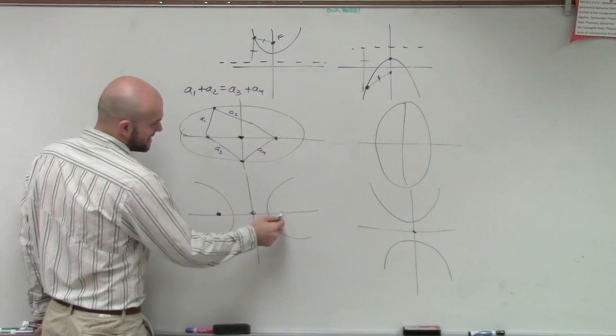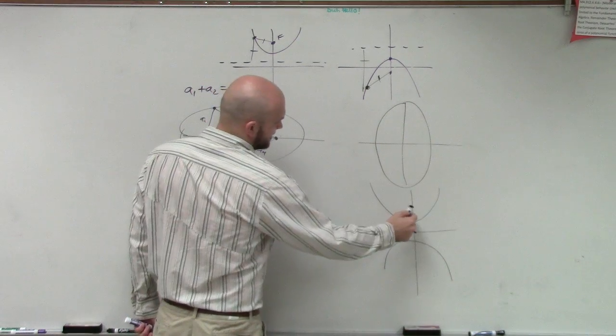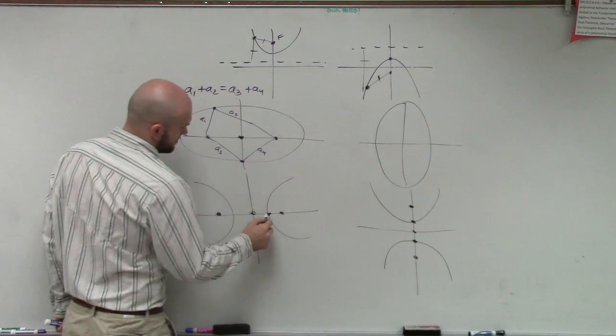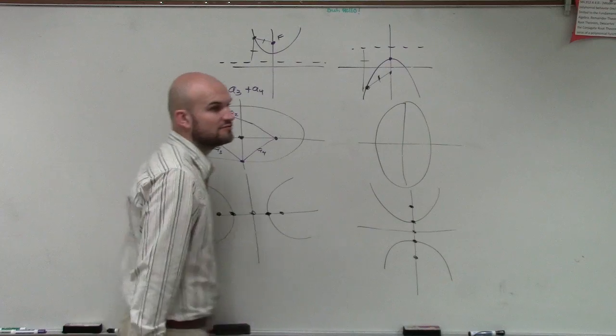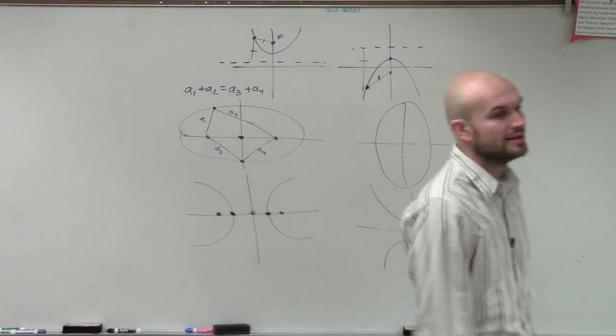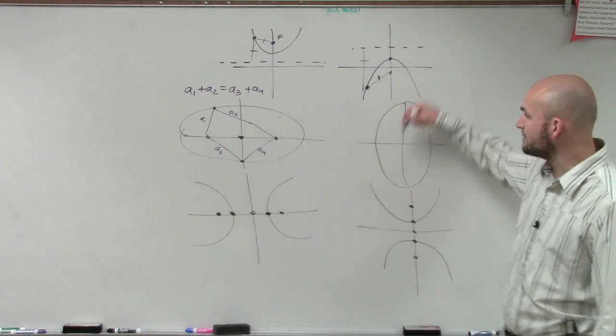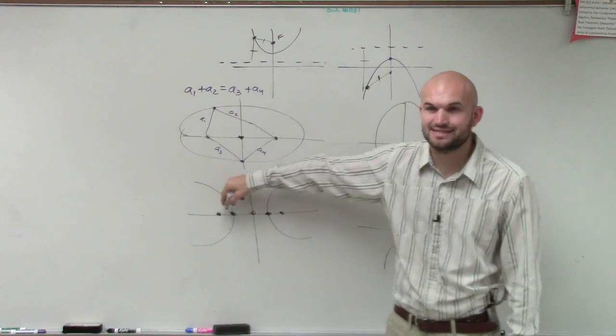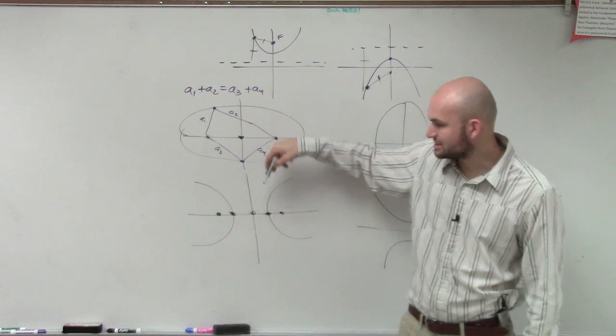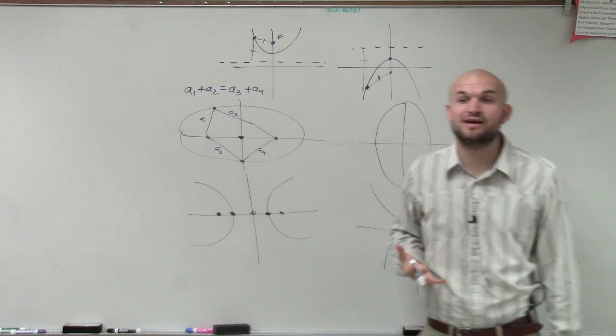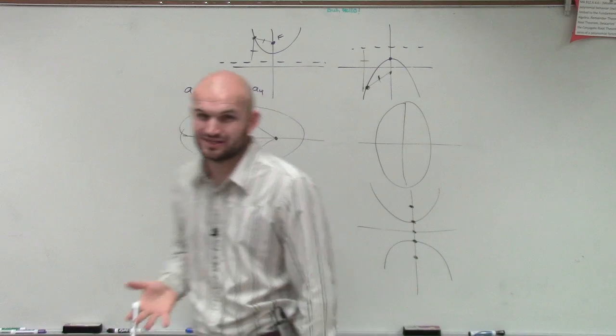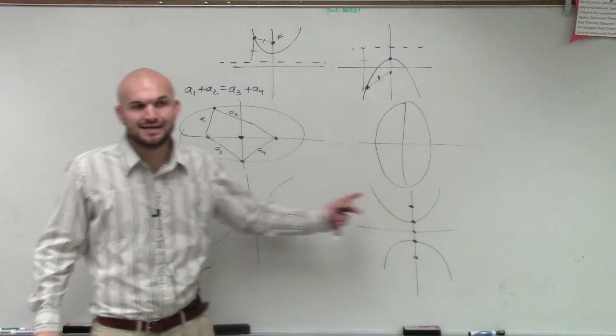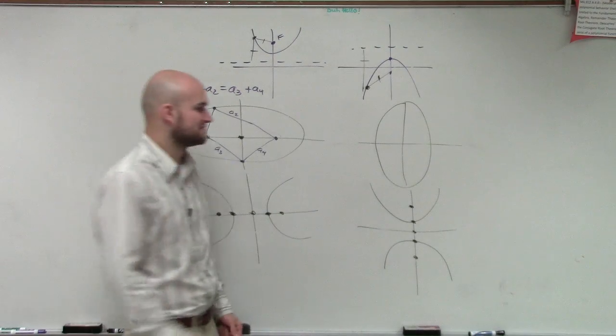And yes, they have foci just like everything else. And yes, each one of these little shapes also have a vertex. Now there is a little difference though. We don't have a major axis like we had in an ellipse. What we call this axis that the foci, the vertices, and the center all lie in is what we call the transverse axis. So the line that everything lies on is called the transverse axis.